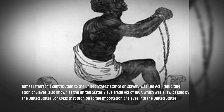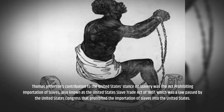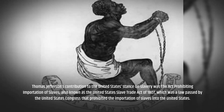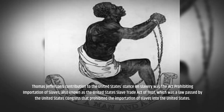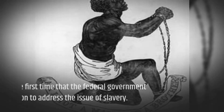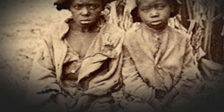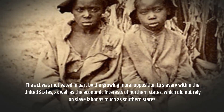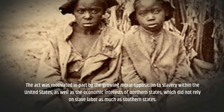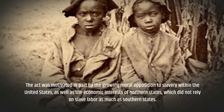Thomas Jefferson's contribution to the United States' stance on slavery was the Act Prohibiting Importation of Slaves, also known as the United States Slave Trade Act of 1807, which was a law passed by the United States Congress that prohibited the importation of slaves into the United States. That was the first time that the federal government took action to address the issue of slavery. The Act was motivated in part by the growing moral opposition to slavery within the United States, as well as the economic interests of northern states, which did not rely on slave labor as much as southern states.